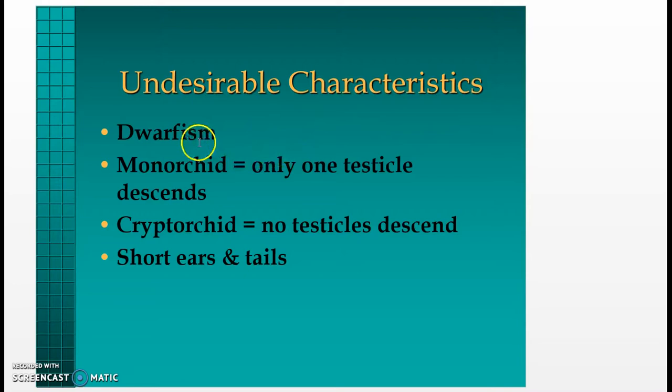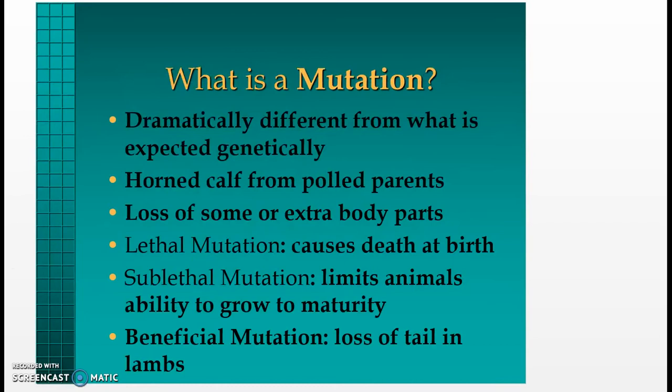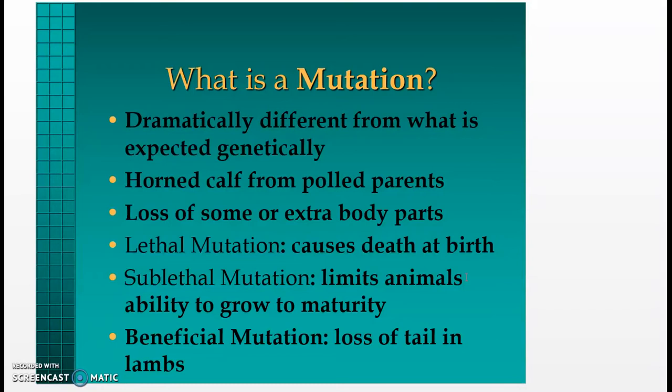Undesirable characteristics include dwarfism, mono-orchid where only one testicle descends, crypto-orchid where no testicles descend, and short ears and tails. What is a mutation? A mutation is dramatically different from what is expected genetically — a horned calf from polled parents, loss of or extra body parts. A lethal mutation causes death at birth; a sublethal mutation limits an animal's ability to grow to maturity; a beneficial mutation is a loss of a tail in lambs.